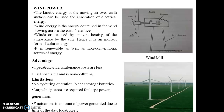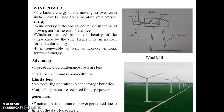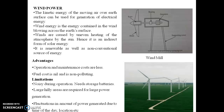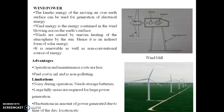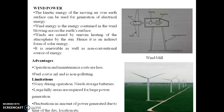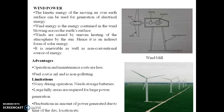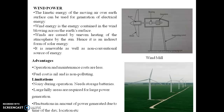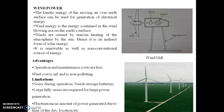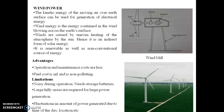Some limitations include: the windmill is very noisy during operation; it needs battery storage because the wind speed varies throughout the day — sometimes 10 km/h, sometimes 60 km/h — and does not consistently reach the preferred 40 km/h. Due to these fluctuations, it cannot be used as an online plant, so electricity must be stored in batteries.